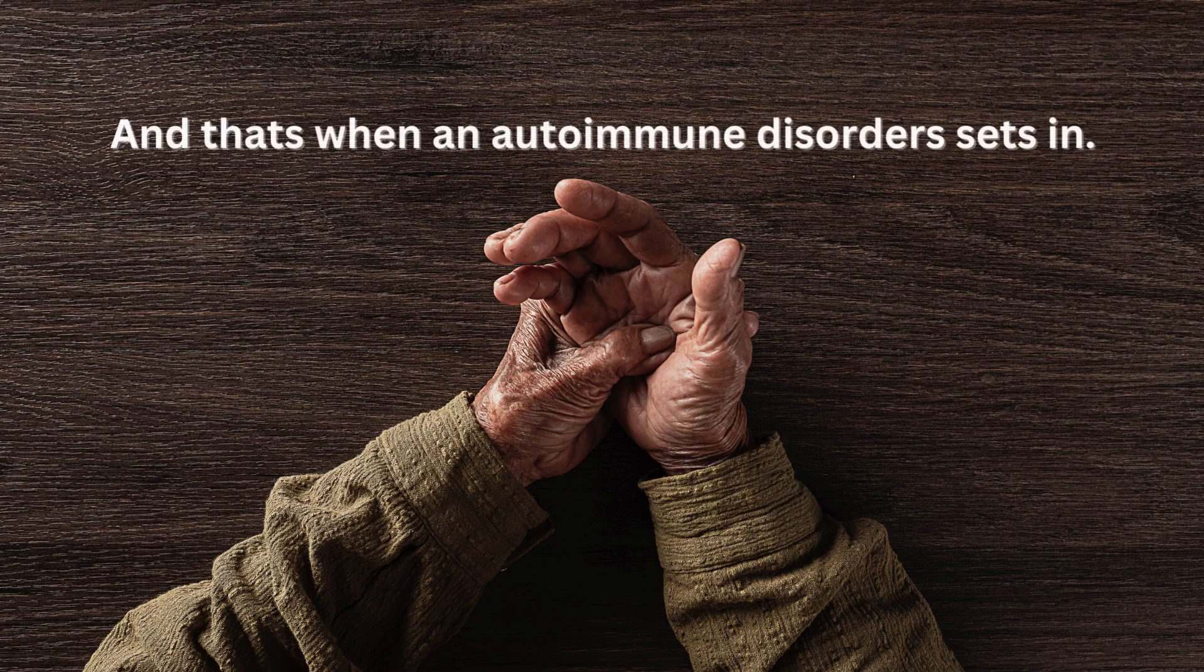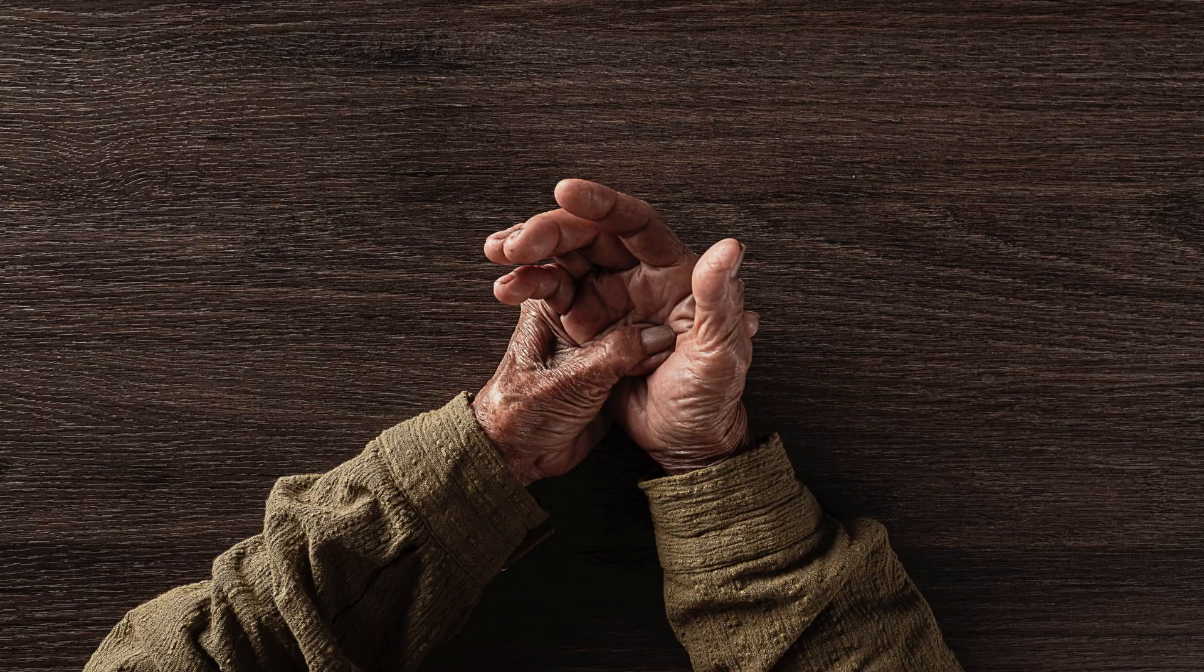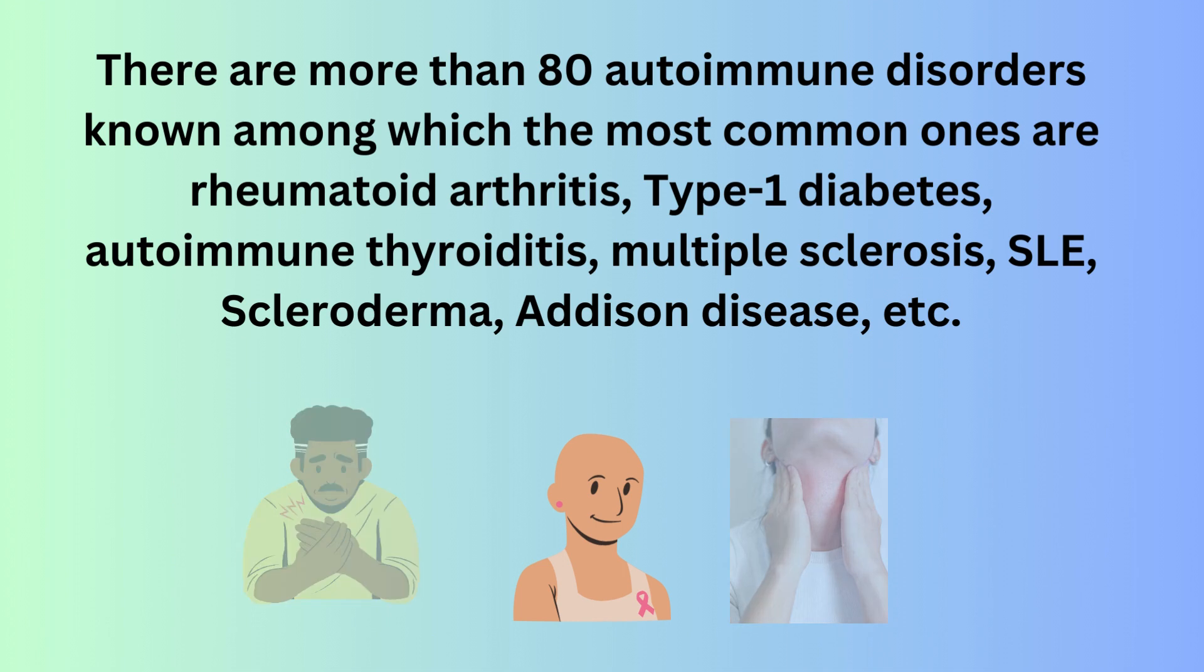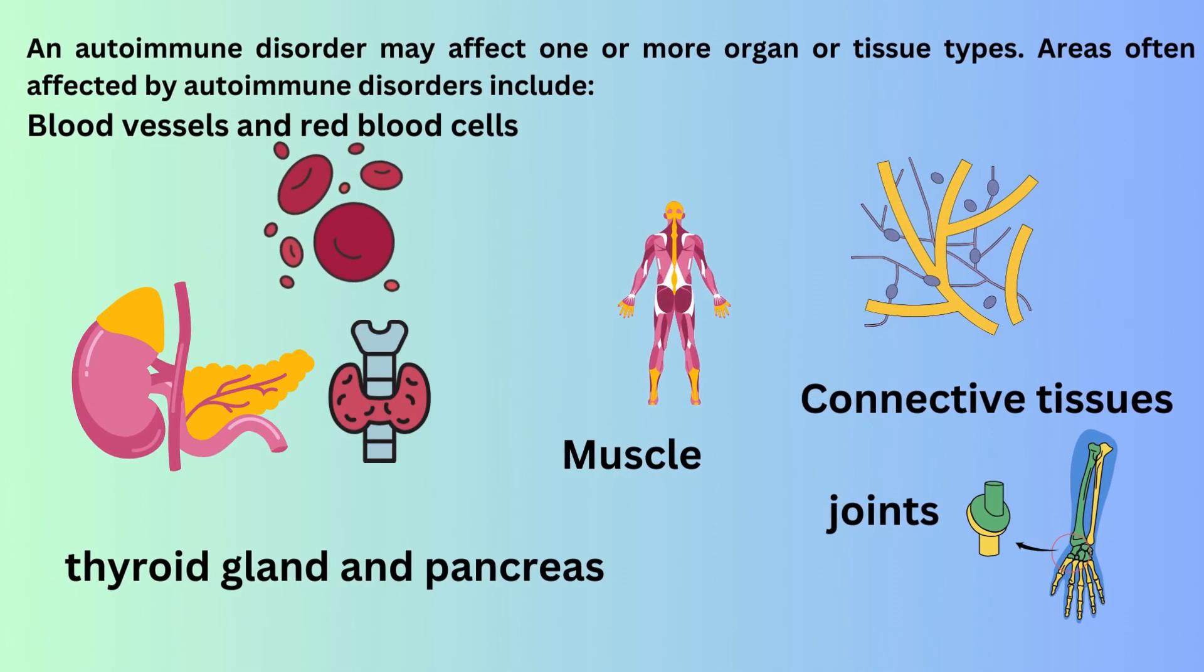That's when an autoimmune disorder sets in. There are more than 80 autoimmune disorders known, among which the most common ones are rheumatoid arthritis, type 1 diabetes, autoimmune thyroiditis, multiple sclerosis, SLE, scleroderma, Addison disease, etc. An autoimmune disorder may affect one or more organ or tissue types.